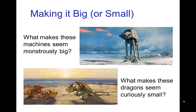For example, if we want these machines from the Star Wars films to seem monstrously big, how is that done? Or these dragons from How to Train Your Dragon — what is it that gives you a sense that they are small as opposed to being large? In other words, how do you establish a sense of scale and size?